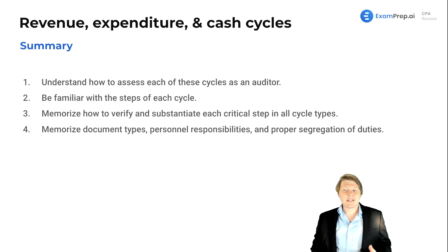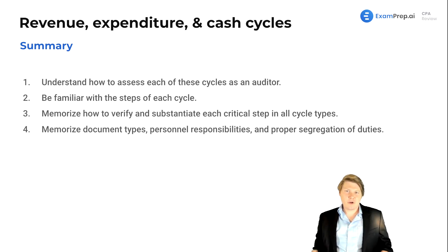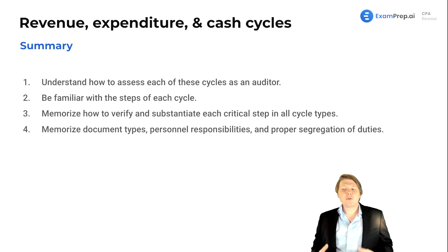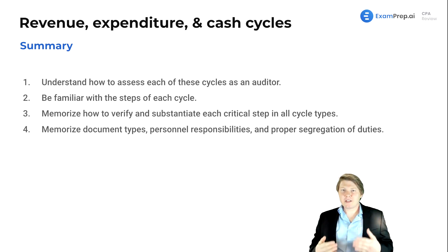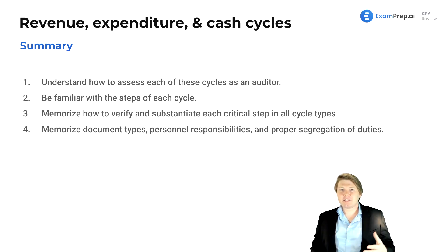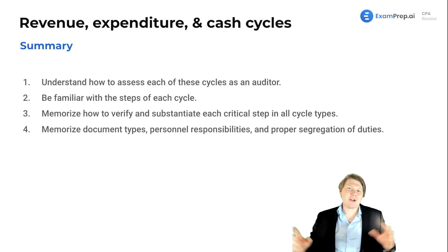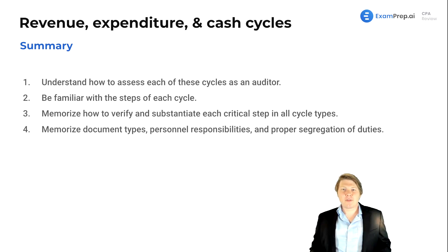First off, we want to understand how to assess each of these cycles as an auditor. A great way to do that is to understand how it works overall as a business person. We also want to be familiar with each step of the cycle — understand how once we generate a sale, we get a purchase order, we create the sale, we ship the goods, we receive the money, and handle all the different accounts and journal entries.